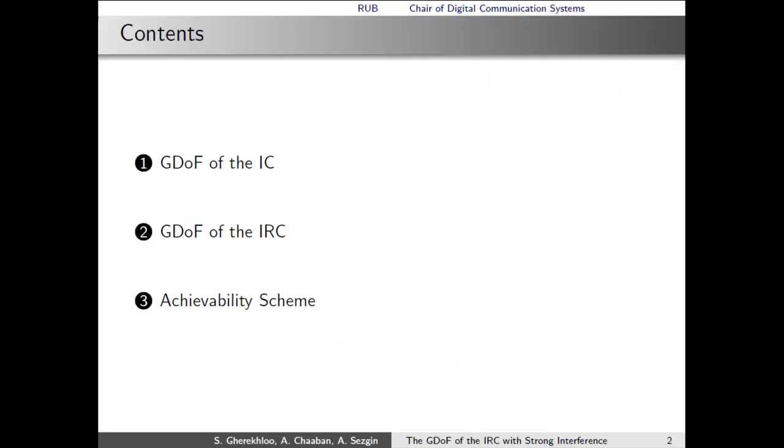Here is the outline of the talk. I will introduce the concept of the generalized degrees of freedom by considering the basic interference channel first. Then I'm going to present the results we have on the generalized degrees of freedom of the interference relay channel. And while discussing the GDoF, I'm going to present the achievability scheme which obtains the GDoF.